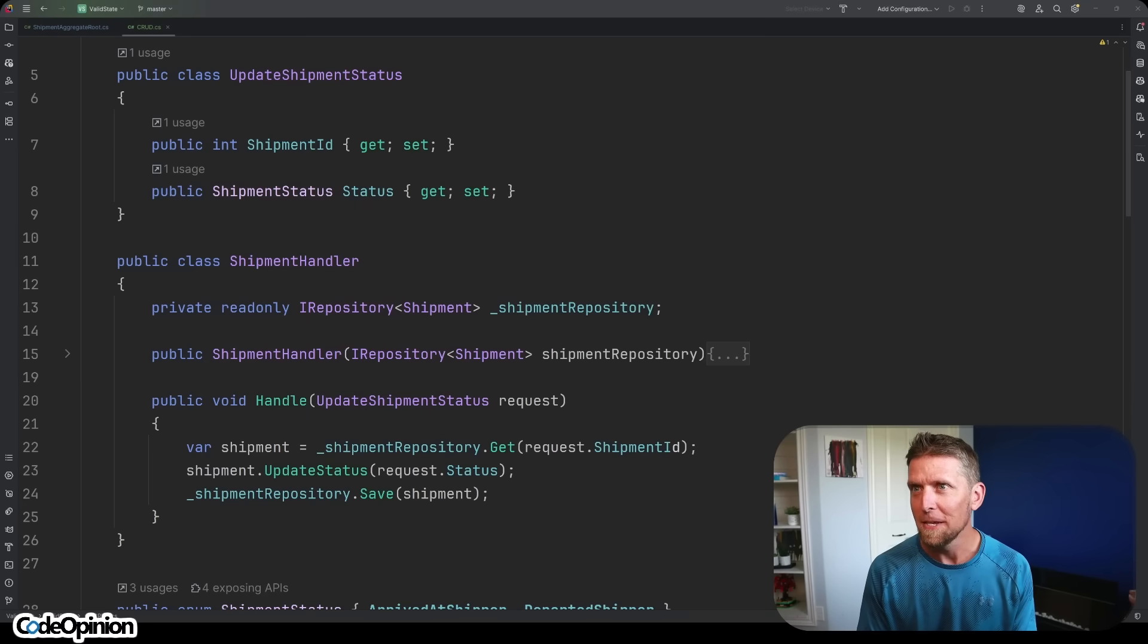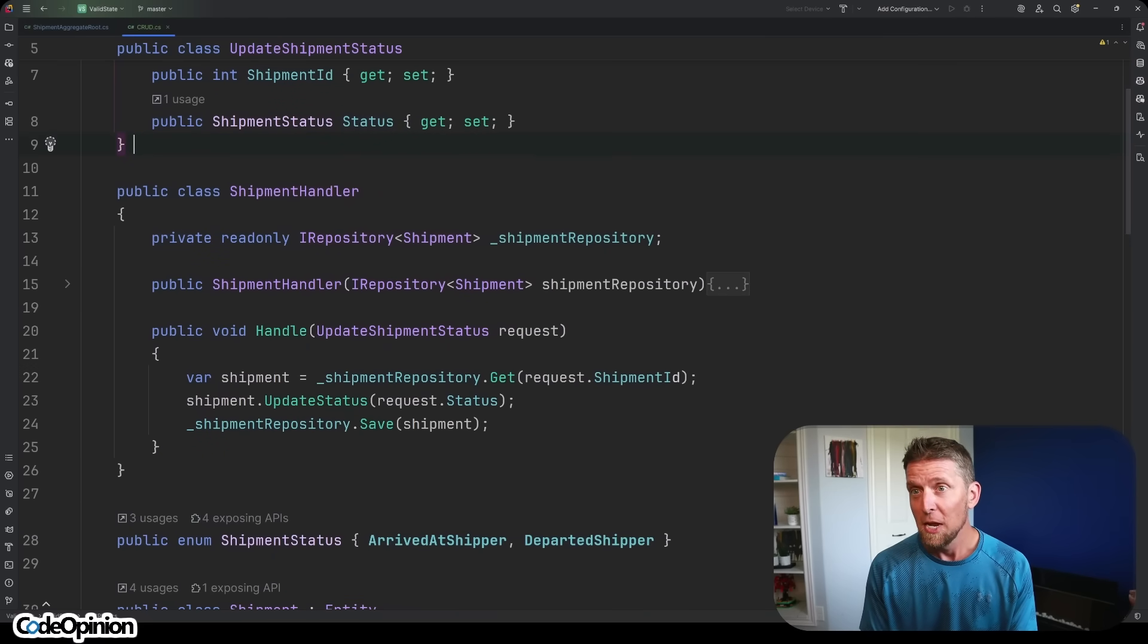Tell me you haven't run into this. So I'm using the example of a shipment. We have this update shipment status as a command, where we take a shipment ID and what the status is. That's probably invoked from some MVC controller or endpoint. Then we have this handler that's actually invoked, where we pass that command in. What are we doing here? We have a repository, where we're getting out the shipment. Then we call update status and save it.